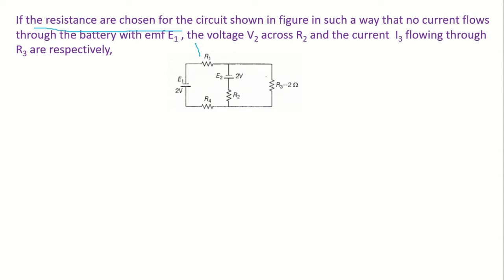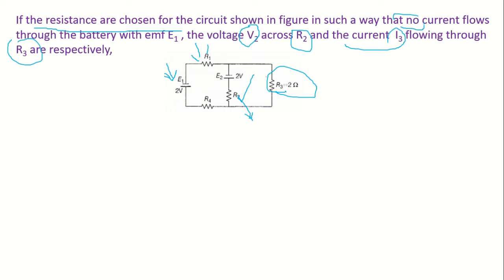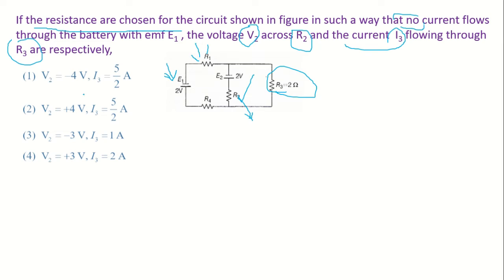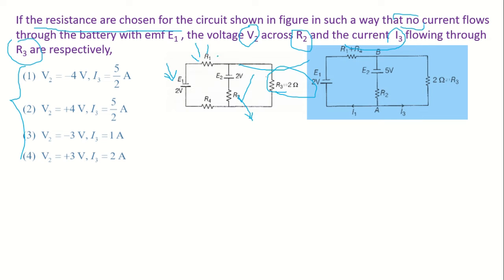In this question it is said that resistances are chosen for the given circuit in such a way that no current flows through the battery EMF1. We have to find V2 across R2 and the current I3 flowing through R3. Here is R2 and we have to find the voltage across it. R3 is here and I1 is flowing through the top branch.